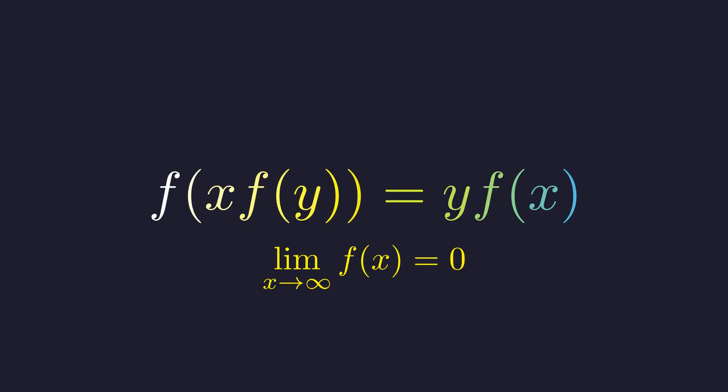Here's a problem from the 1983 International Mathematical Olympiad. We need to find all functions from positive real numbers to positive real numbers satisfying these two conditions. Now this might seem pretty abstract at first glance, but as we'll see, there's some beautiful structure lurking beneath the surface.